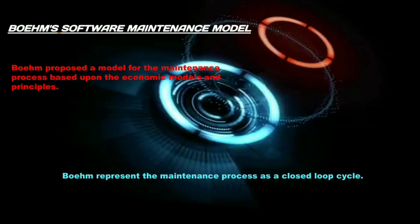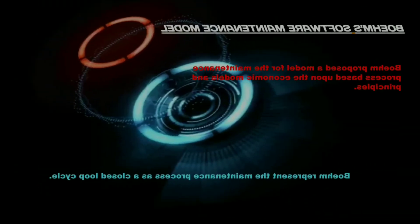Boehm's software maintenance model: in 1983, Boehm proposed a model for the maintenance process, which was based upon economic models and principles. An estimate of the number of full-time software personnel required in each phase of software development can be obtained by dividing the number of programmer months required by the elapsed time available. The Boehm maintenance process model is represented as a closed loop, as shown in the diagram.